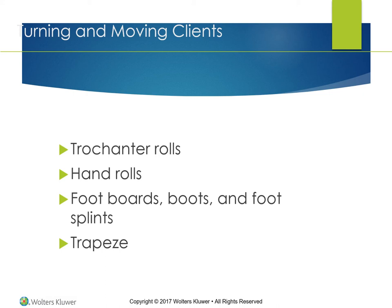A trapeze is a triangular piece of metal hung by a chain over the head of the bed. The client grasps the trapeze to lift the body and move about in bed. Unless arm movement or lifting is undesirable, a trapeze is an excellent device for helping a bedridden client to increase activity and independence. Promoting client independence with movement and activity is an important intervention for clients with musculoskeletal problems. Unlike log rolling and pull sheets, which are nurse-initiated methods, the overhead trapeze is used by the client.